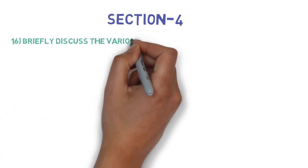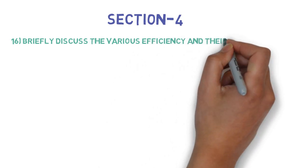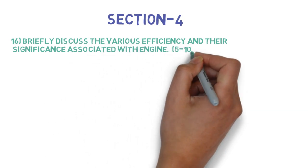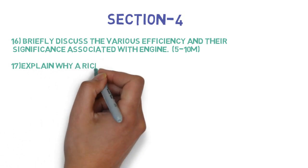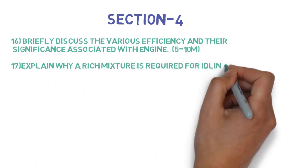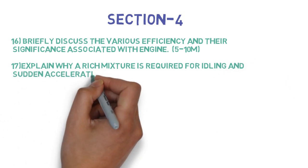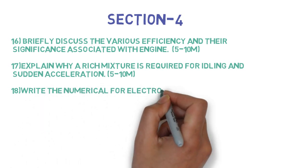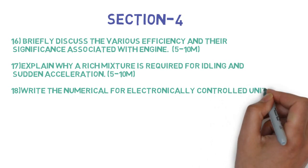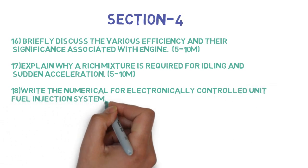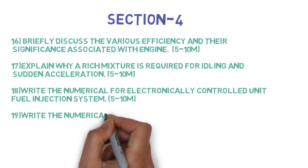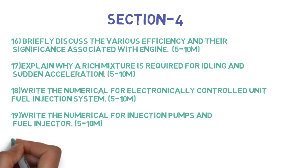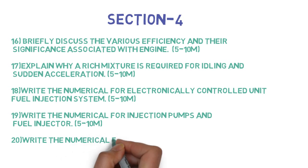Let's go to Section 4. The first question is: Discuss the various efficiencies and their significance associated with engines. This can come for 10 marks. Next is: Explain why a rich mixture is required for idling and sudden acceleration. This can come for 5-10 marks. Next is: Write the numerical for electronically controlled unit fuel injection systems. Next question is: Write the numerical for injection pumps and fuel injection. And the last question is: Write the numerical for brake thermal and volumetric efficiencies. Each can come for 5-10 marks.